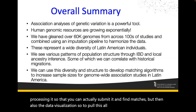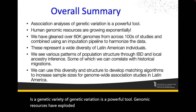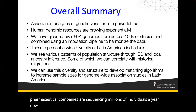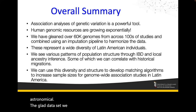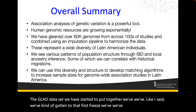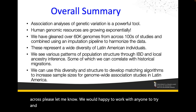To pull this all together: we talked about association analysis — genetic variation is a powerful tool. Genomic resources have exploded and are only increasing; some large pharmaceutical companies are now sequencing tens of thousands of individuals a month. The GLAD dataset has gotten to its first data freeze, we've submitted a manuscript based on it, and any additional datasets you know of — please let me know. We want to make this as comprehensive as possible and fill in the many gaps that still exist.